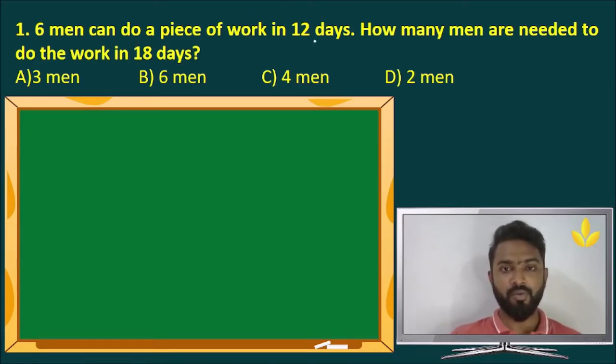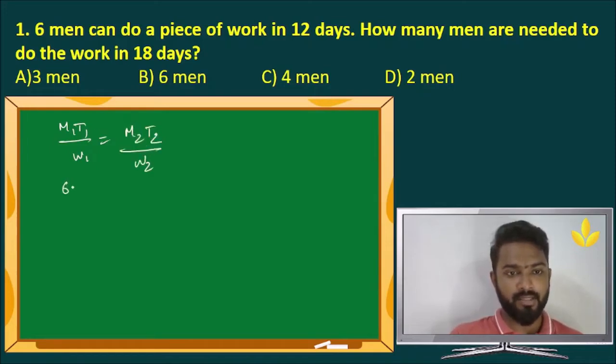Six men can do a piece of work in 12 days. How many men are needed to do the work in 18 days? So we have M1 T1 by W1 equals M2 T2 by W2. M1 is 6, T1 is 12, W1 is 1, a piece of work is just 1. M2 is x that is what we need to find out, T2 is 18, W2 is 1.